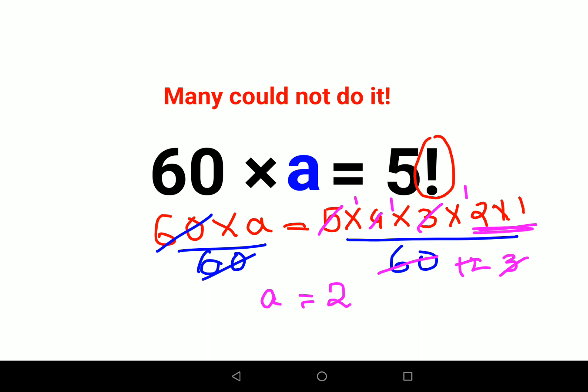Now see, if you had a clear understanding, you would have known that 5 factorial is 120, and from there you would have understood what the value of a is.